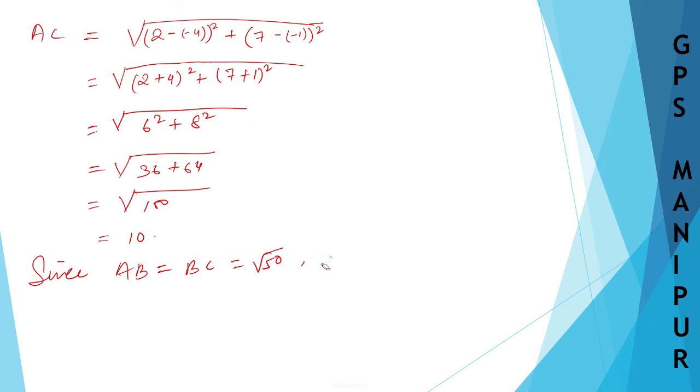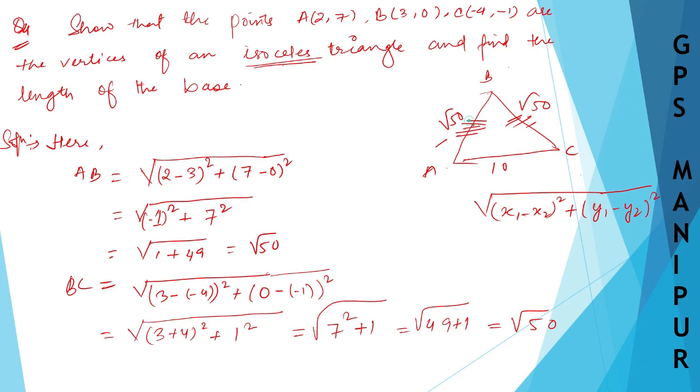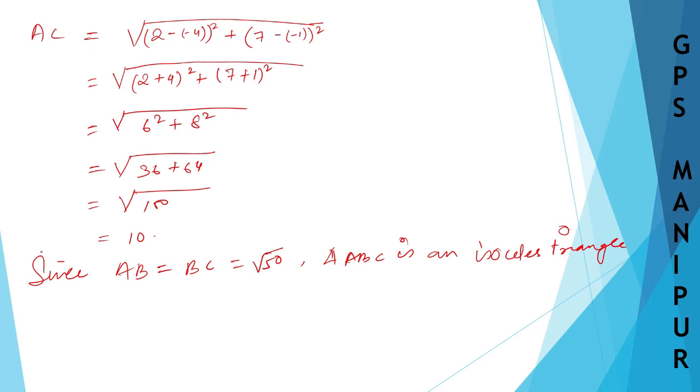Since AB is equal to BC is equal to root 50, or this 50 I can further classify and write down as 5 root 2 also. Since these are equal, triangle ABC is an isosceles triangle. And the base, that is if these two sides are equal AB and BC are equal, then this is your base AC. Therefore base is equal to AC which will be 10. And this is your answer. That's all, thank you so much, we will meet in the next video.